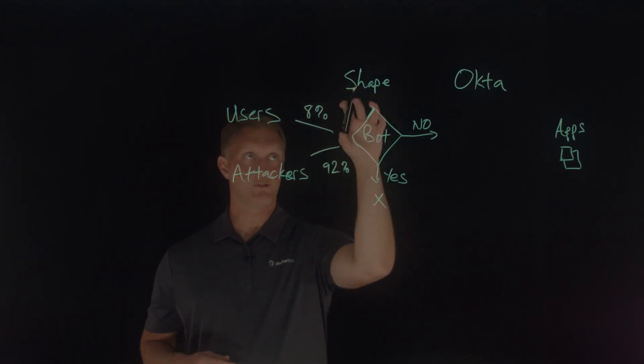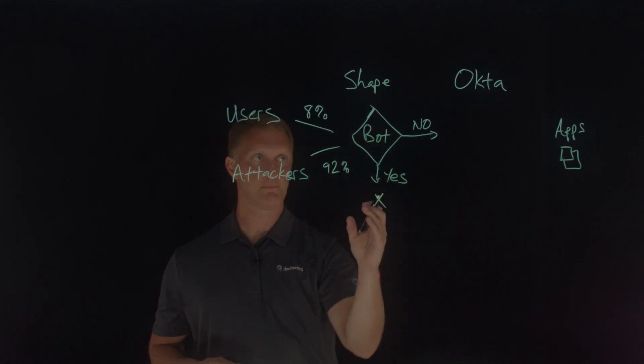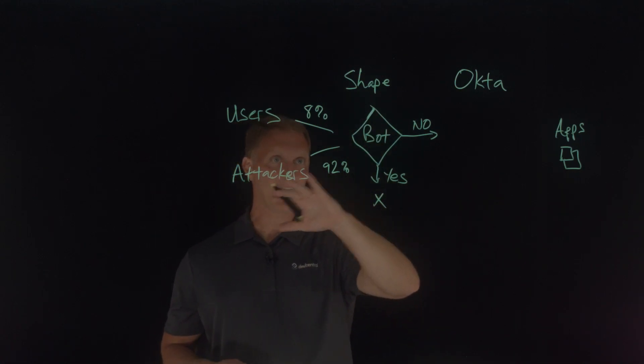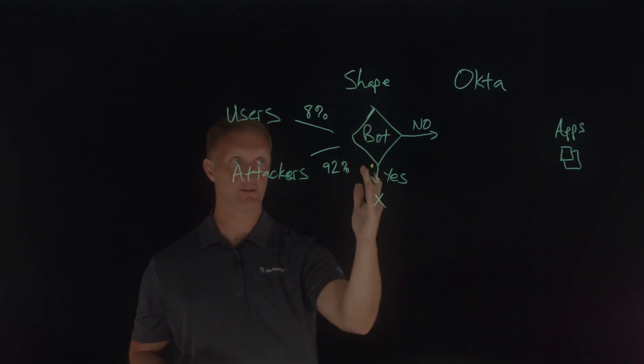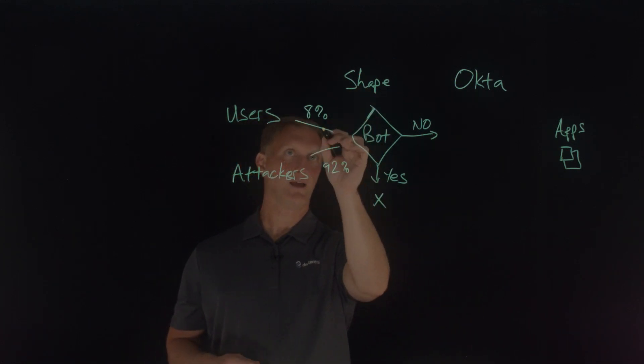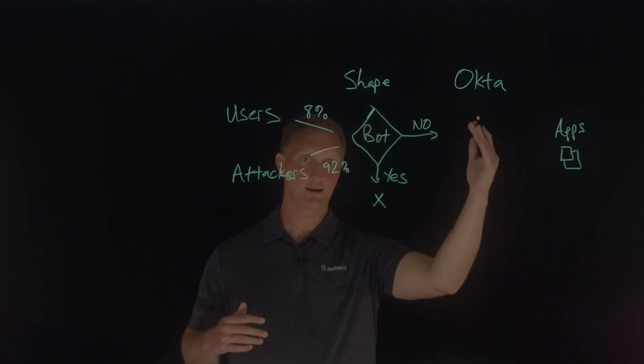So what that means is when Shape blocks the bot traffic, then 92% of the traffic is stopped right here at the Shape layer. And so that means only 8% of the full traffic makes it back to Okta.